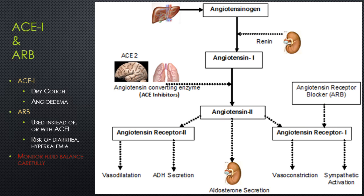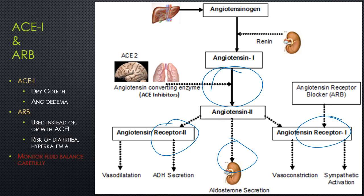There are two classifications of medications that work to block the RAS pathway: ACE inhibitors and angiotensin receptor blockers. These decrease afterload and preload by blocking the vasoconstrictor effects and stopping aldosterone secretion. ACE inhibitors exert their effects by blocking the conversion of angiotensin 1 to angiotensin 2, while angiotensin receptor blockers exert their effects at the receptor sites for angiotensin 2. When the ACE inhibitor blocks the conversion, it also blocks the ability of ACE, also referred to as kinase, from breaking down bradykinin in the lungs.